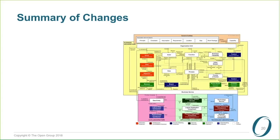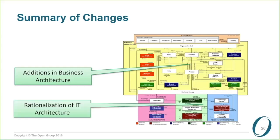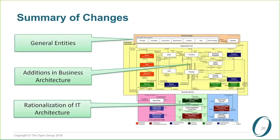The major changes in version 9.2 include additions to support new material in business architecture, rationalization of the IT architecture, and some changes to the box at the top.